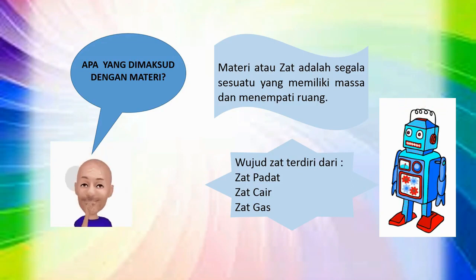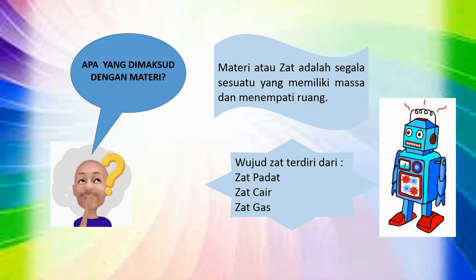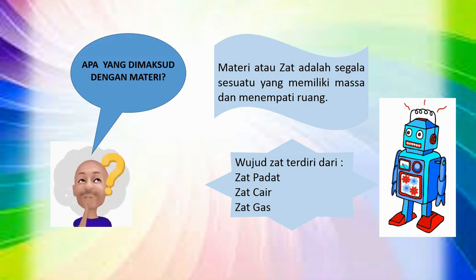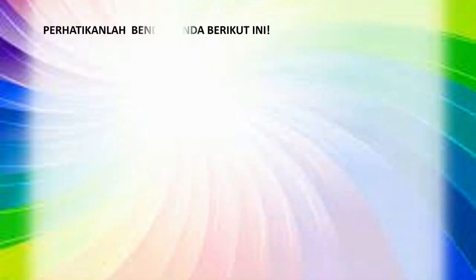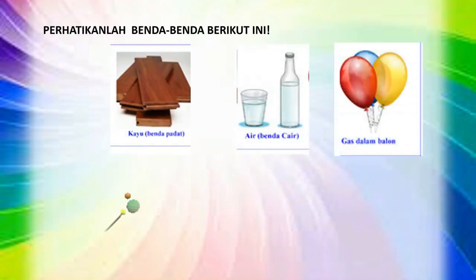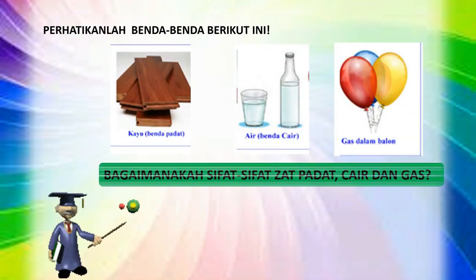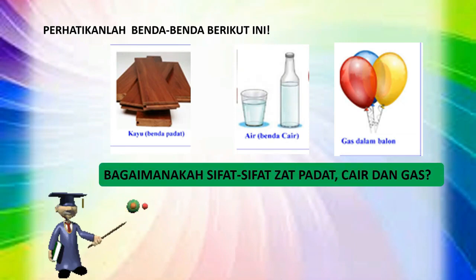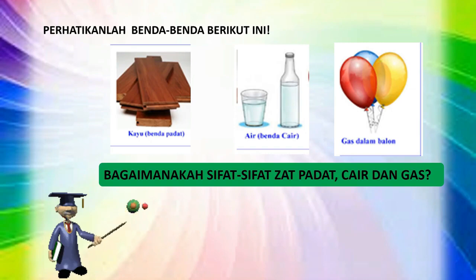Wujud zat terdiri dari zat padat, zat cair, dan zat gas. Perhatikanlah benda-benda berikut ini. Bagaimanakah sifat-sifat zat padat, cair, dan gas?